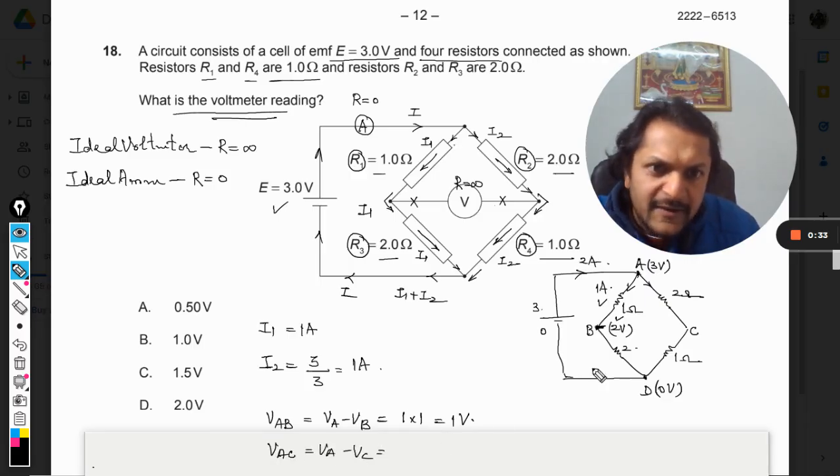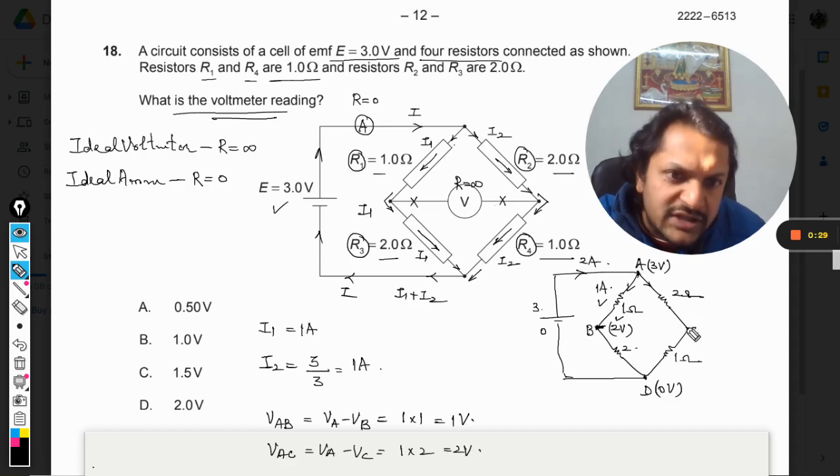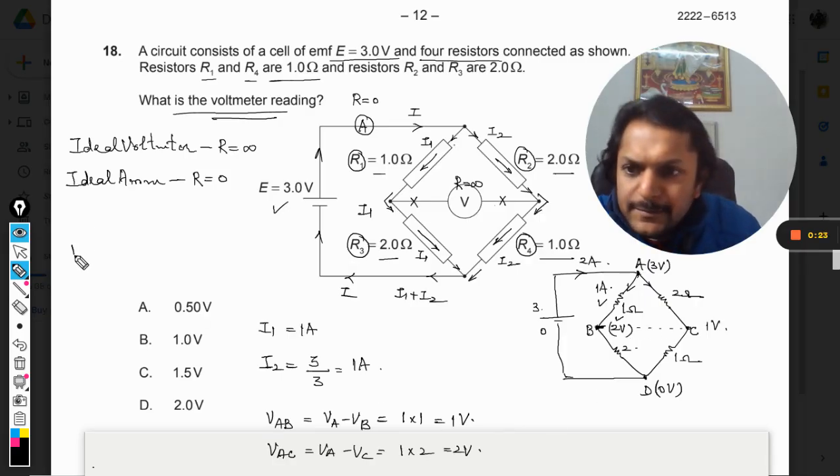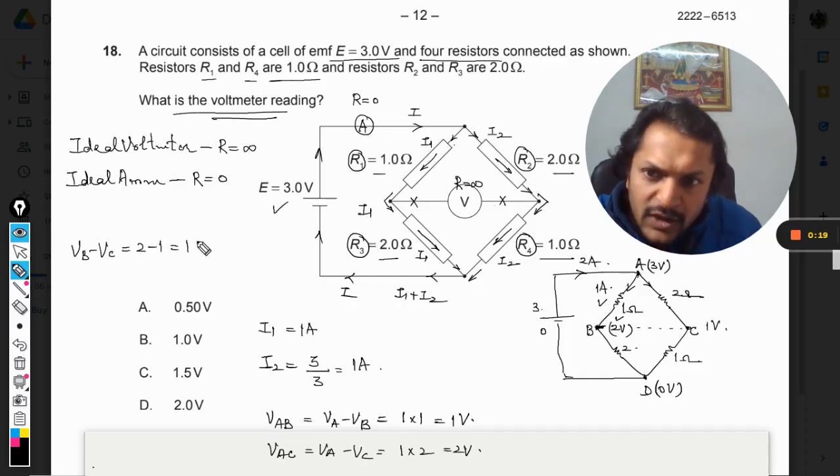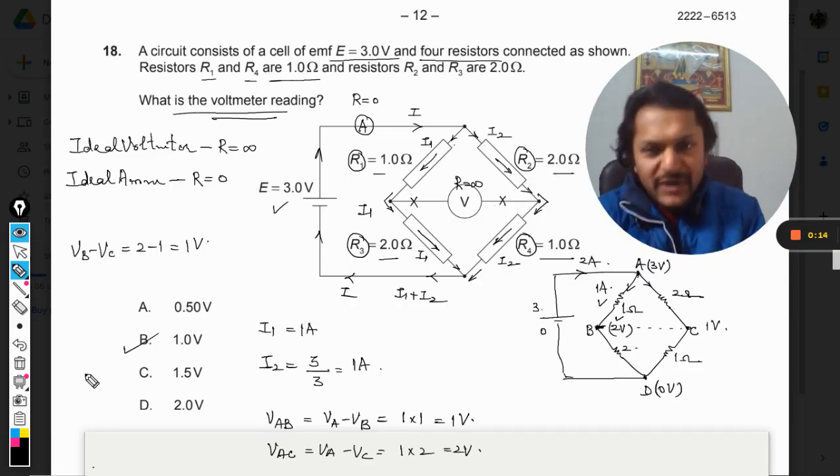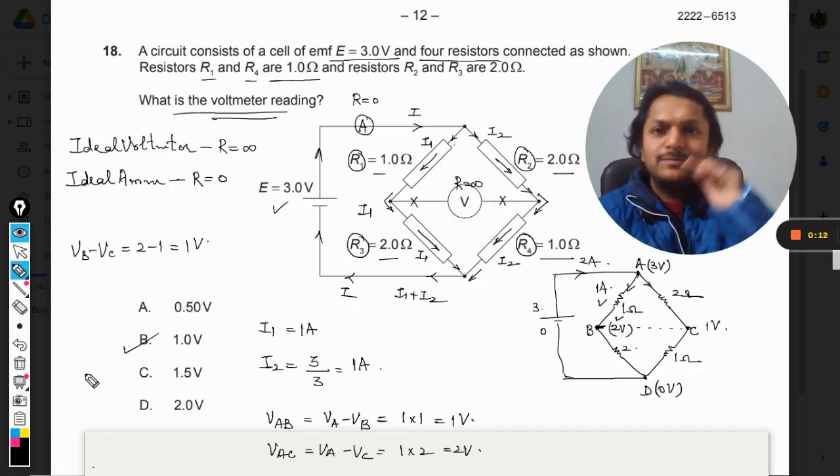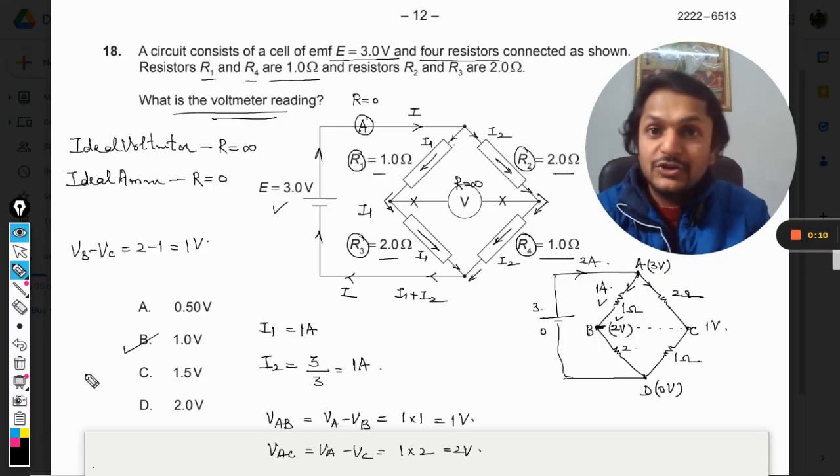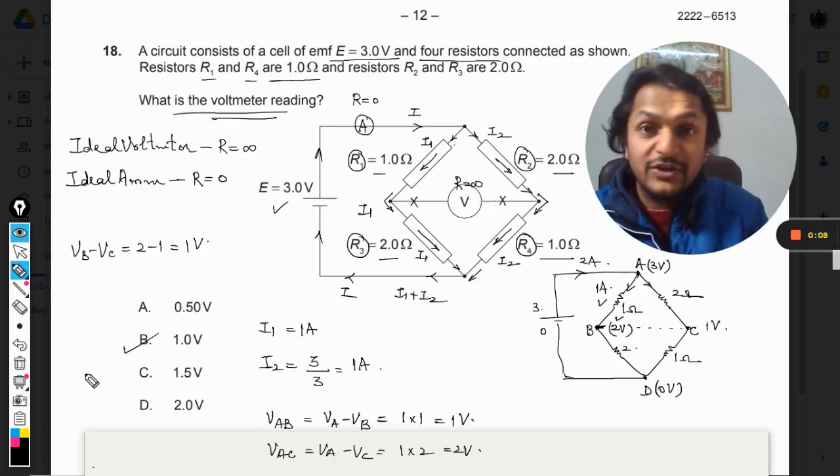So this is coming out to be 3 minus 2, that is 1 volt. So what is the potential difference between B and C? 2 minus 1, 1 volt. And there we go, the answer for this question is B. So my dear students, this is professor. Please subscribe to the YouTube channels, also share the video with all your friends. All the best.